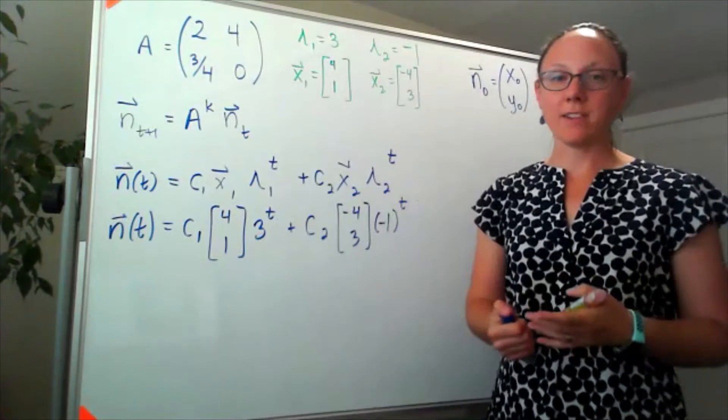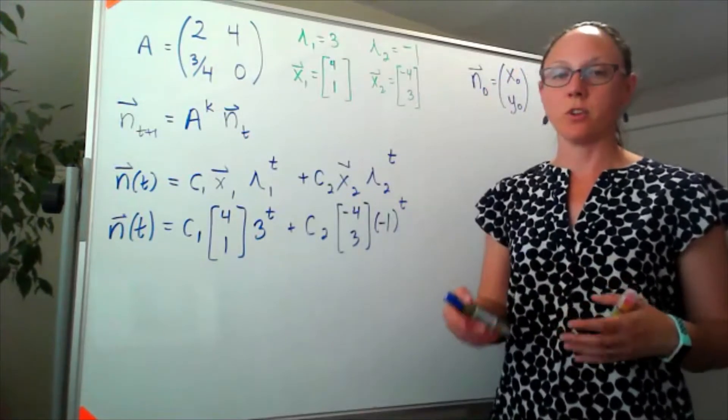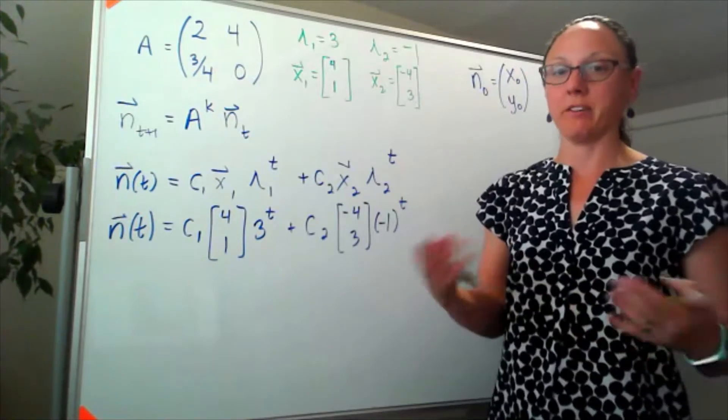Now what we've been asked for in the problem is to look at the stable age distribution, which means we're looking at the ratio of either parents to offspring or offspring to parents.